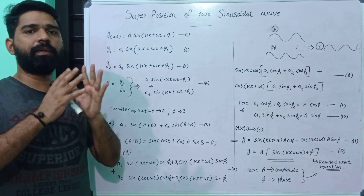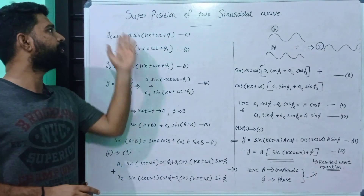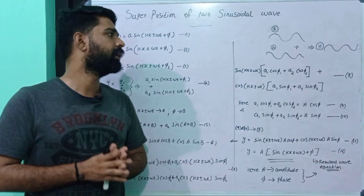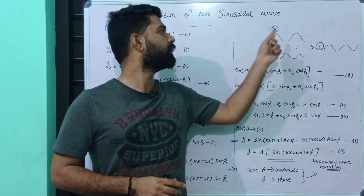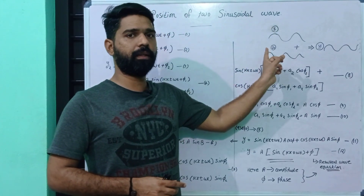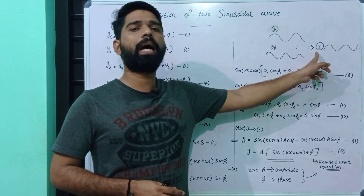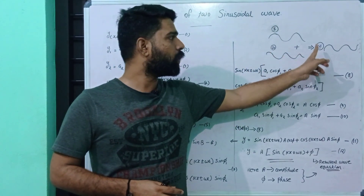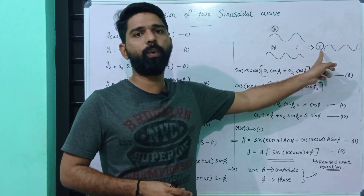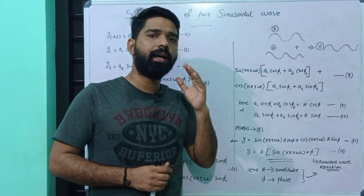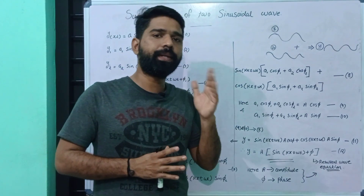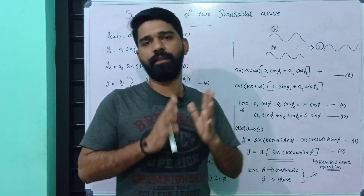Hi! We are going to discuss the superposition of two sinusoidal waves. We are going to consider two waves, y1 and y2. What is the resultant wave? What is the equation? What is the amplitude? What is the phase? What is the intensity of that resultant wave?